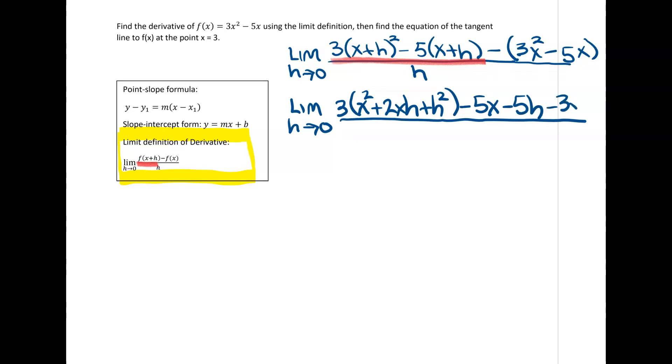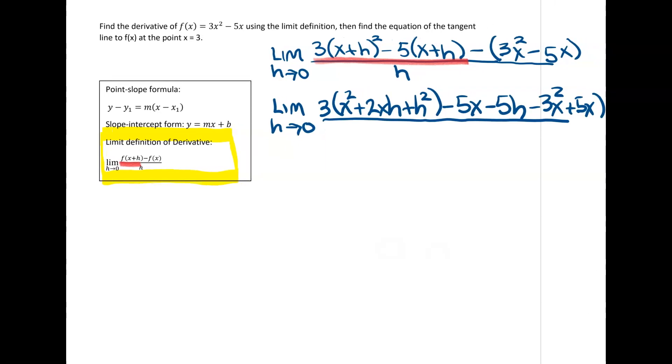Distribute minus 3x squared. And this becomes plus 5x. All divided by h. Okay, so I'm going to distribute my 3 and then I'm ready.